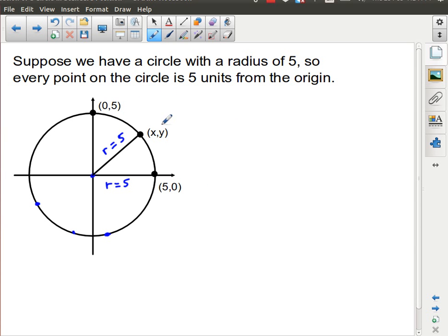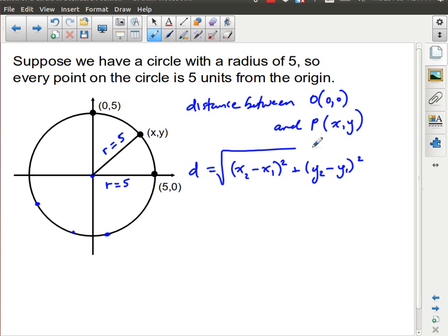So, if that's the case, then this point, if I want to look at the distance between the origin, which is 0, 0, and our point, which is xy, well, how do I do that in terms of the distance formula? d equals x2 minus x1 all squared plus y2 minus y1 all squared, and square root that.